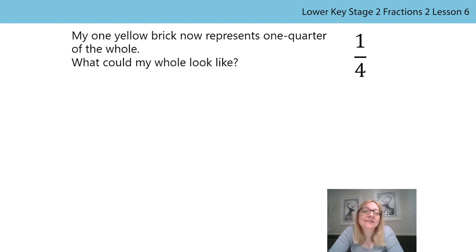How did you get on? Did you find more than one answer? I had a go too. I wonder if we found any of the same models? For each of my models, I used one yellow brick and three blue bricks. Because the denominator is four, then I know there must be four equal parts, or in this case, four equal bricks. If one brick is yellow, then there must be three blue bricks.